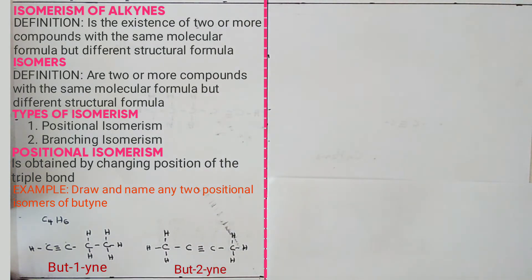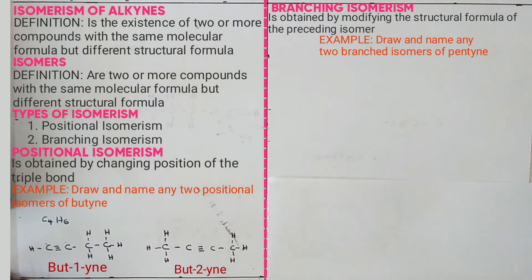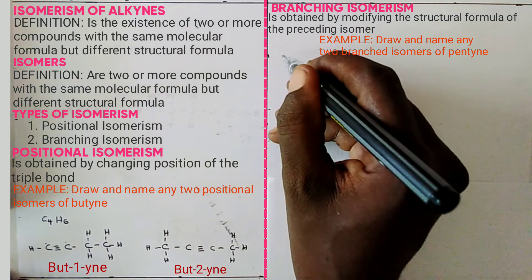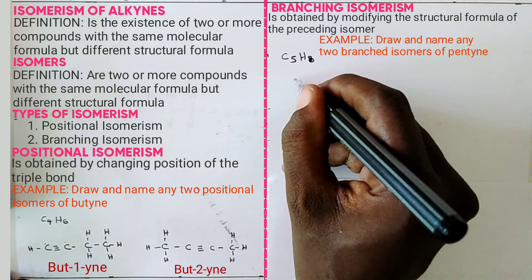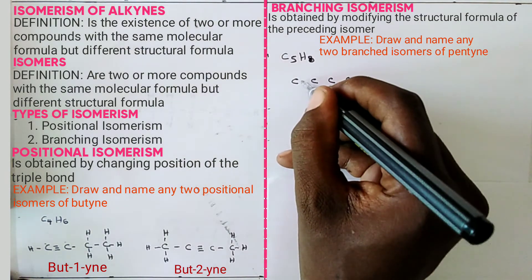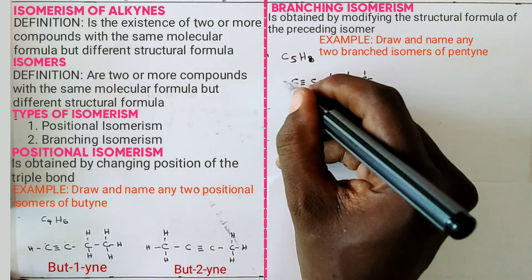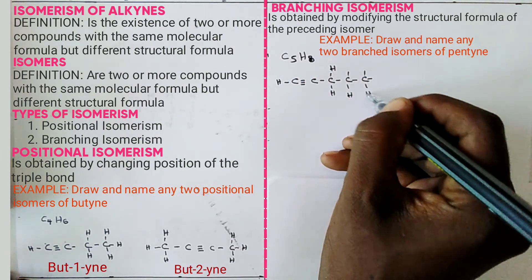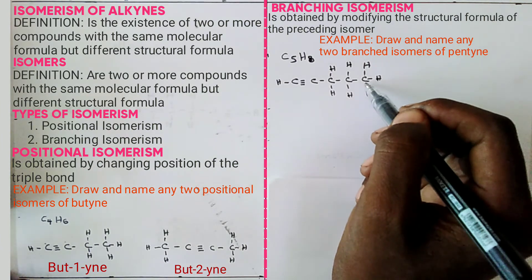Branching isomerism is obtained by modifying the structural formula of the preceding isomer. For example, draw and name any two branch isomers of pentyne. Pentyne is C5H8. For the first isomer, draw the normal straight chain of 5 carbon atoms, place the triple bond at carbon 1, make the rest single bonds, and add all the hydrogen atoms.